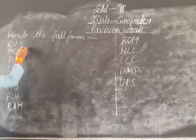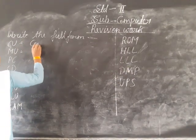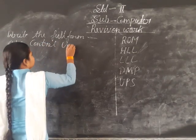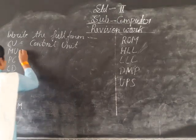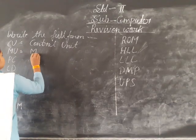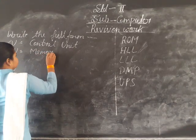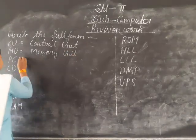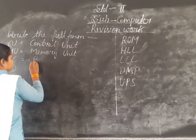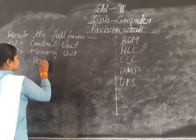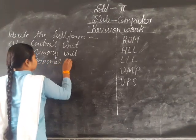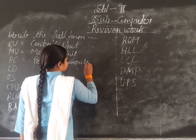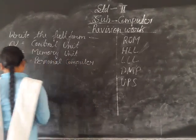So, CU stands for Control Unit — C-O-N-T-R-O-L Control Unit U-N-I-T. And MU stands for Memory Unit — M-E-M-O-R-Y U-N-I-T. And PC stands for Personal Computer — P-E-R-S-O-N-A-L C-O-M-P-U-T-E-R. Personal Computer.